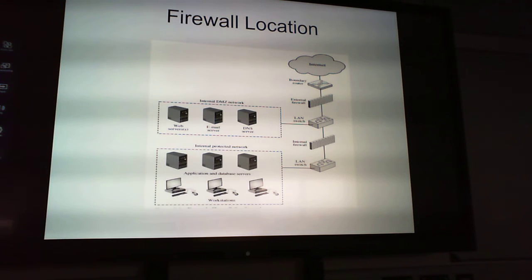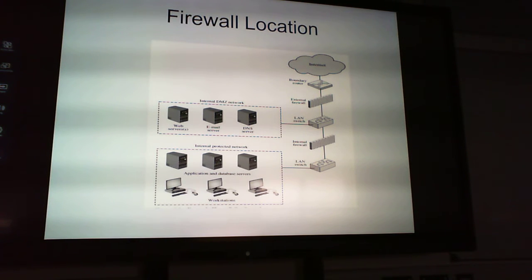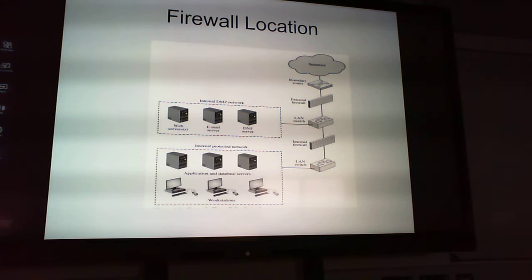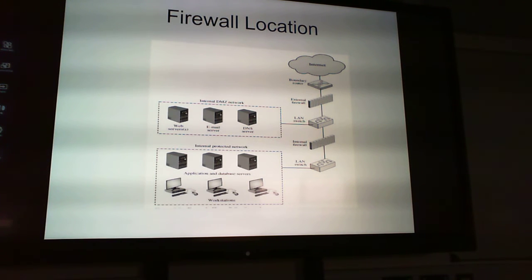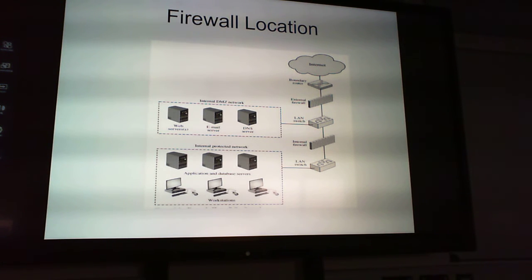Firewall location in a network: from the internet, traffic goes through the ISP to a boundary router, then through an external firewall to a LAN switch with DNS, email, and web servers in the DMZ. From there it goes through a secondary LAN switch, through an internal firewall, to another LAN switch, and finally to application servers, database servers, and workstations.